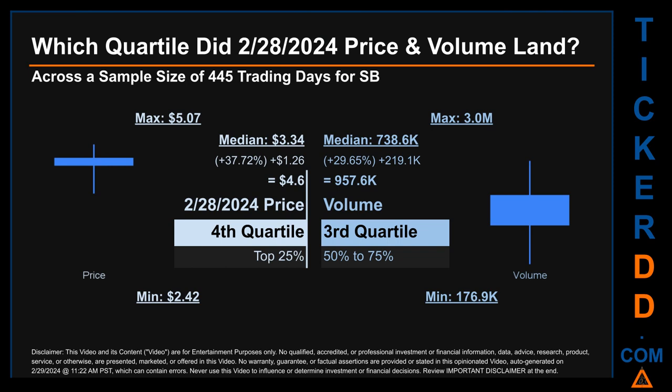Quartiles tell us about the spread of a data set by breaking that data set into quarters, just like how the median breaks the set in half. Descriptively, SB has a median price of $3.34; therefore, February 28, 2024's price was higher than that middle marker by 37.72 percent. The day's volume of 957.6 thousand was more than the median by 29.65 percent.